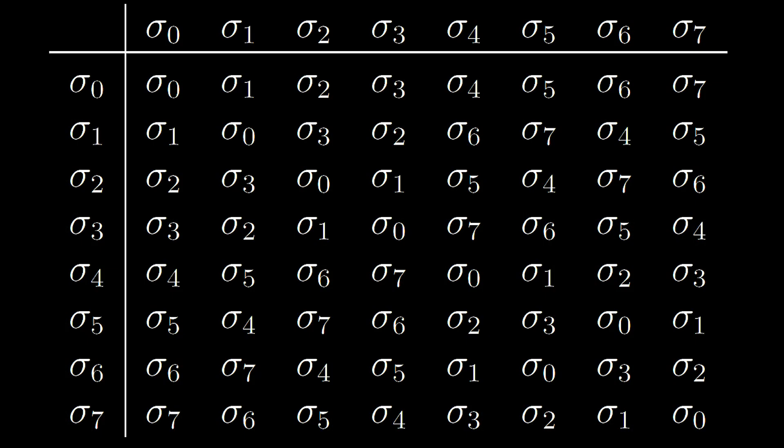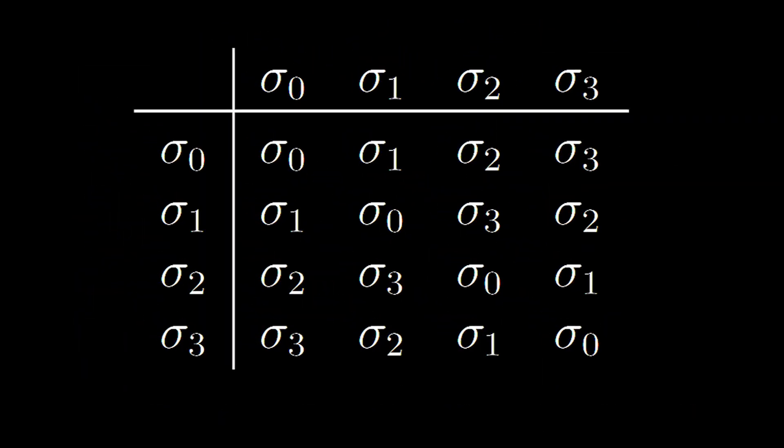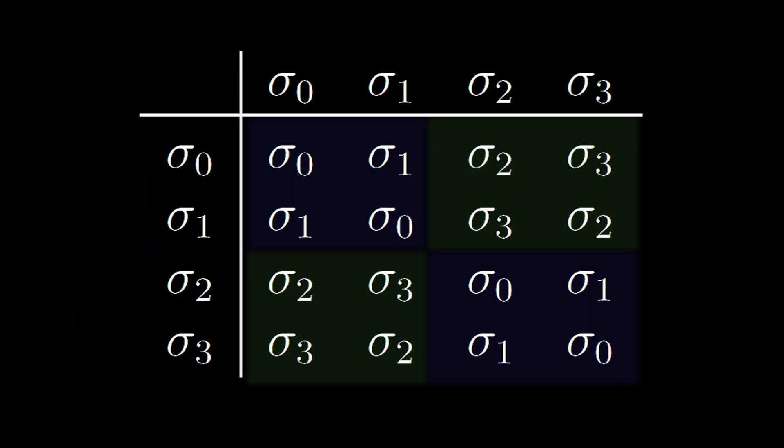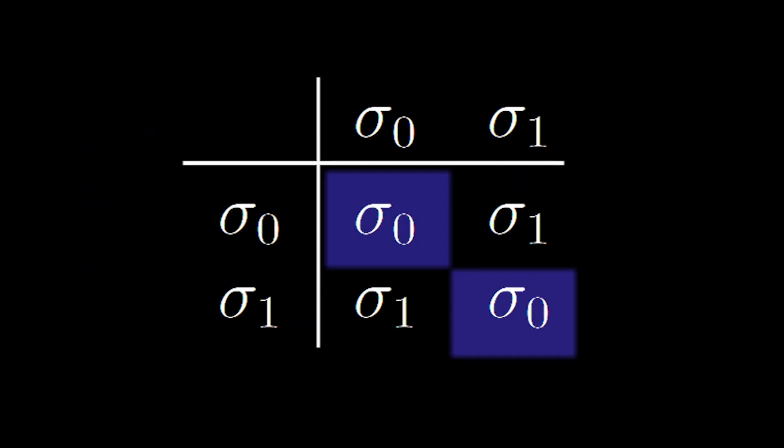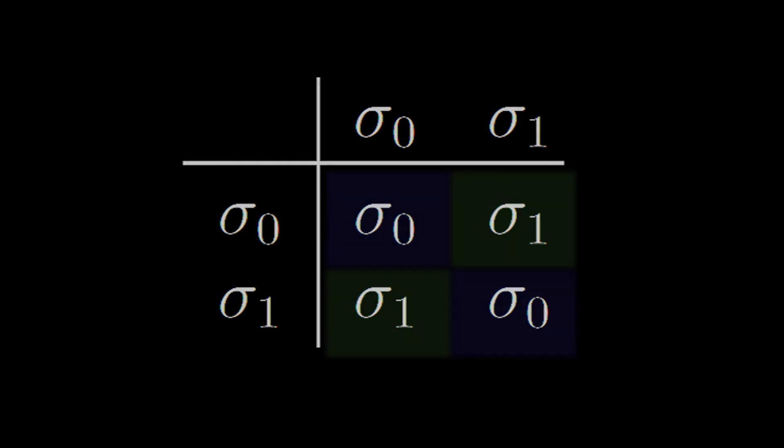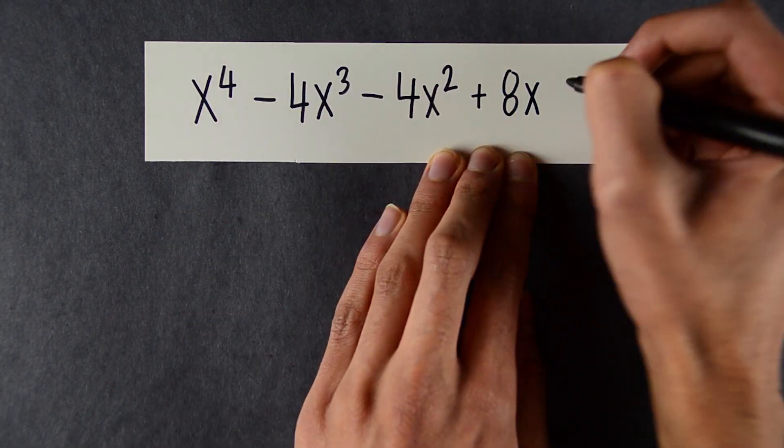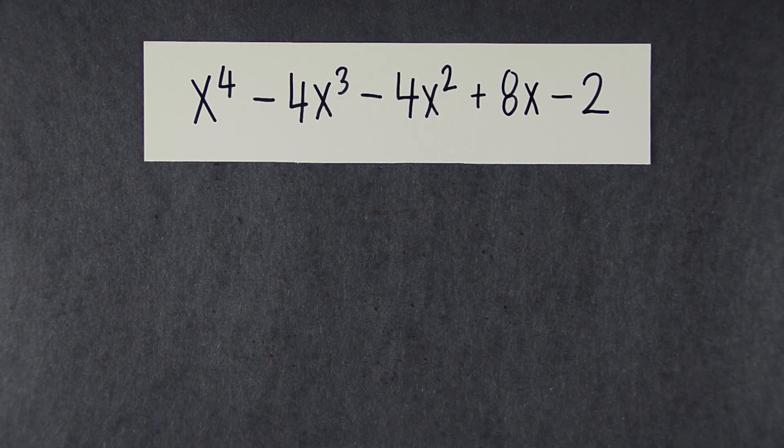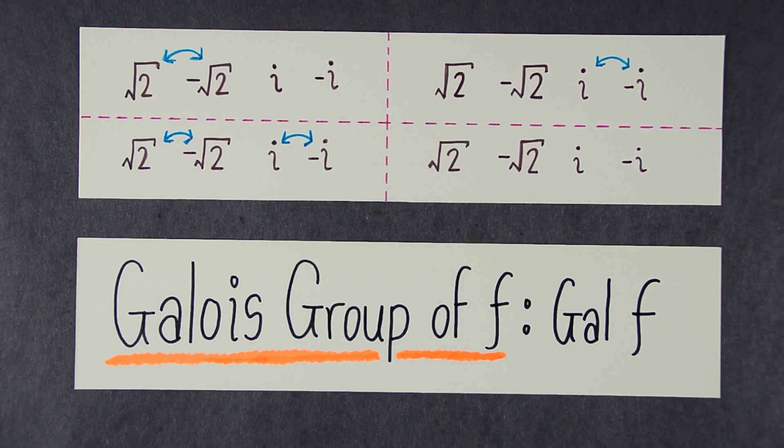And the reason we care about it is because you can determine whether a polynomial is solvable by radicals by looking at the structure of its Galois group. To see what structure the Galois group needs to have, we'll look at this example of a polynomial that is solvable by radicals, and we'll study what its Galois group looks like.